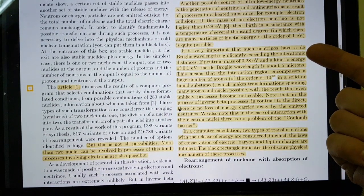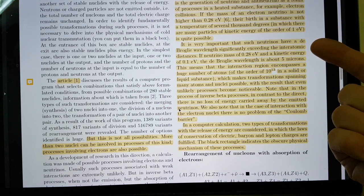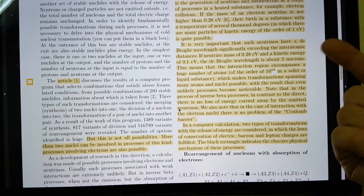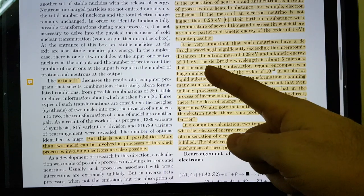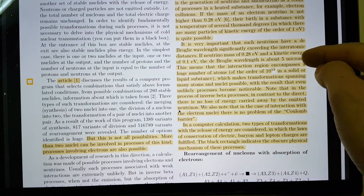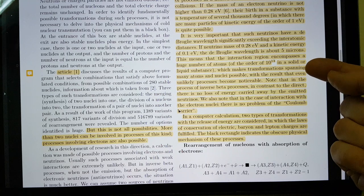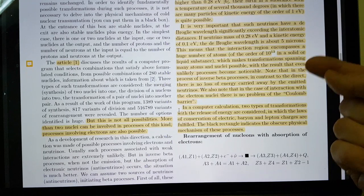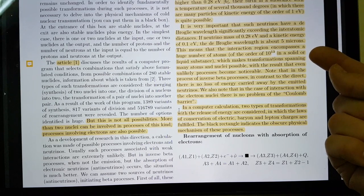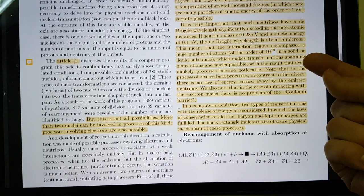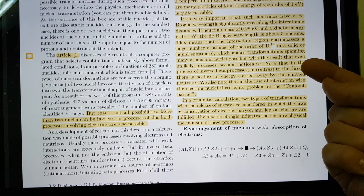He's saying, it is very important that such neutrinos have a De Broglie wavelength significantly exceeding the interatomic distances. If neutrino mass is 0.2 eV and kinetic energy is 0.1 eV, the De Broglie wavelength is about 5 microns. This means that the interaction region encompasses a huge number of atoms of the order of 10 to the 13 in a solid or liquid substance. Of course, his experiment, the 225-day experiment, was with liquid nickel, being at the temperature it was, which makes transformation spanning many atoms and nuclei possible, with the result that even unlikely processes become noticeable.